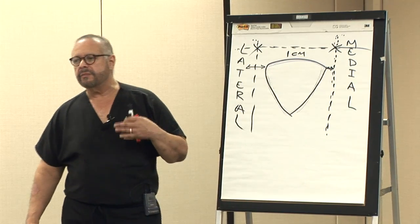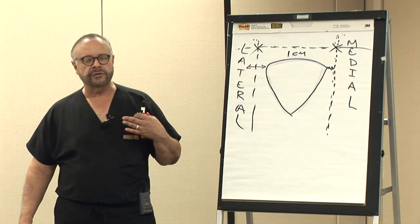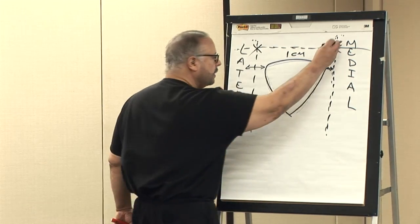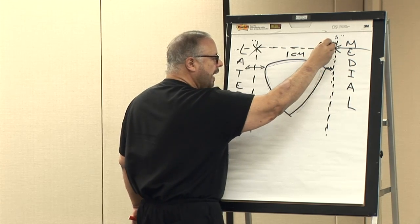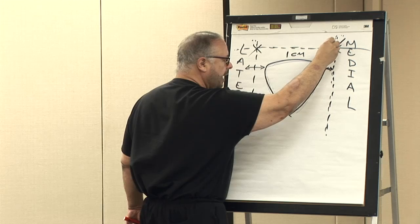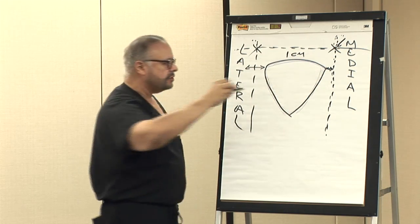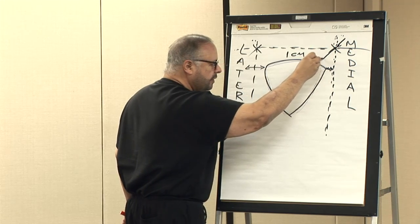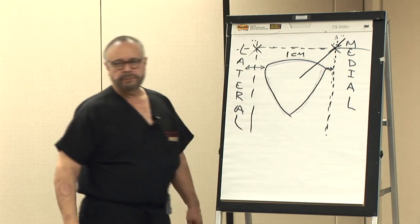These are my favorite approaches because I don't have to go through any bony structure. All I have to do is bring my needle at a 45-degree angle at the entry site where the two lines intersect, and come at a 45-degree angle towards mid-patella.